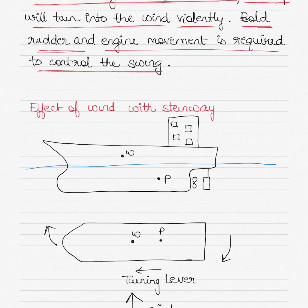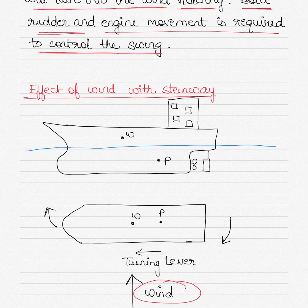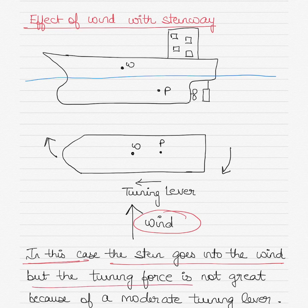When the vessel is going astern with the wind from the port beam, the pivot point is no longer forward — it shifts aft because the pivot point is forward only when the ship is going ahead. In this case the turning lever is somewhat reduced because the pivot point has shifted aft. The stern now goes into the wind as the bow cants to starboard, but because the turning lever is not great, there is no violent turn into or away from the wind.